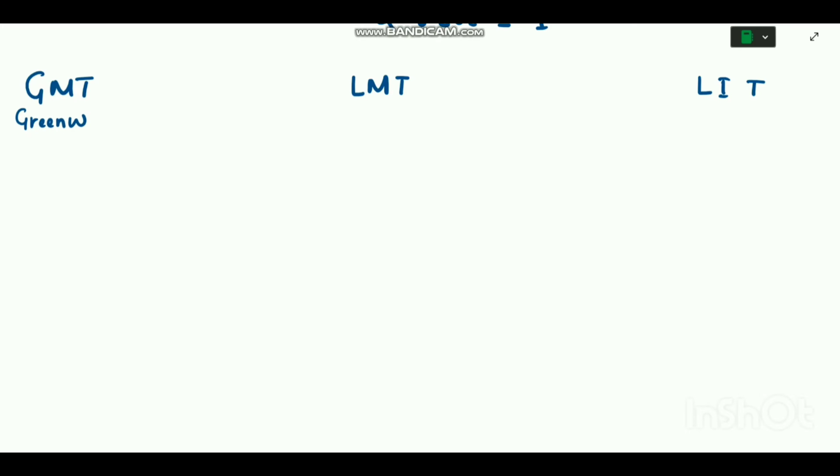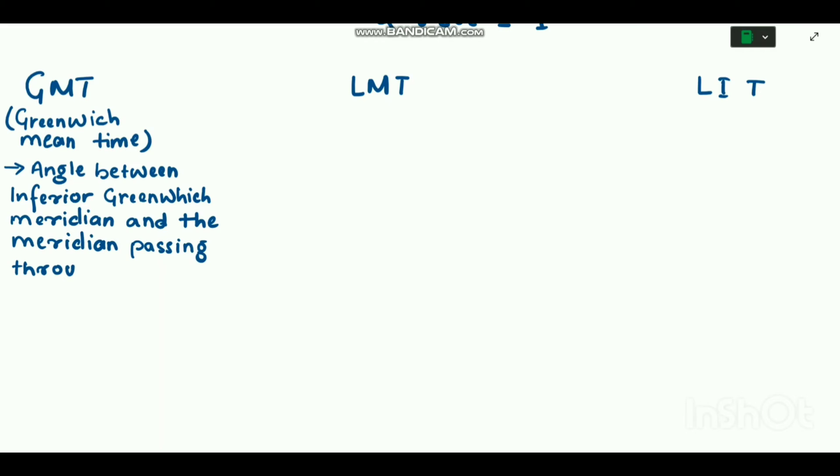Now let's understand what is GMT, LMT and LIT. First, GMT: GMT is Greenwich Mean Time. But what is Greenwich Mean Time? The angle between the inferior Greenwich meridian and the meridian passing through the mean Sun, and it is measured clockwise from inferior Greenwich meridian, is called Greenwich Mean Time.